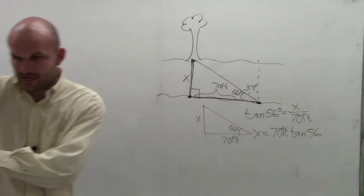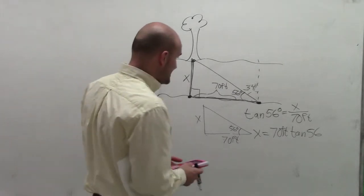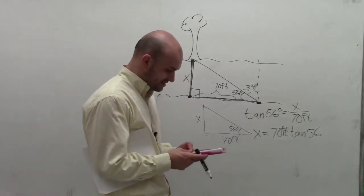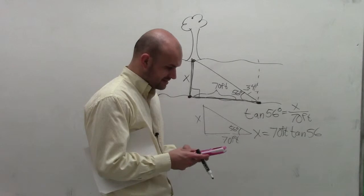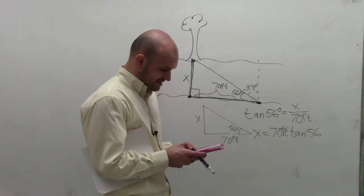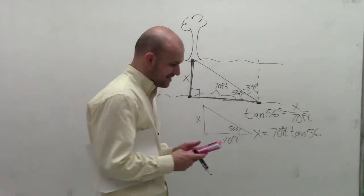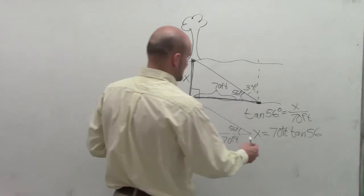So I look for my handy calculator, which is off the set here. And now I just go ahead and take tangent of 56 times 70. That's not right. 70 times the tangent of 56. I forgot to close my parentheses. Which is now going to give me 103.77.